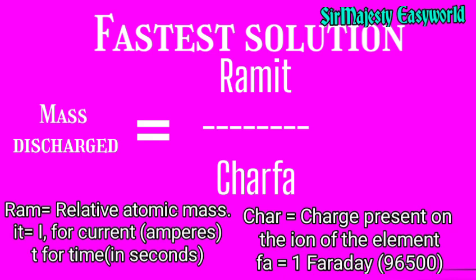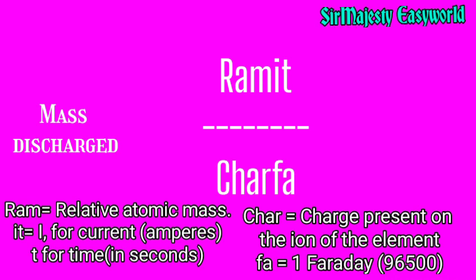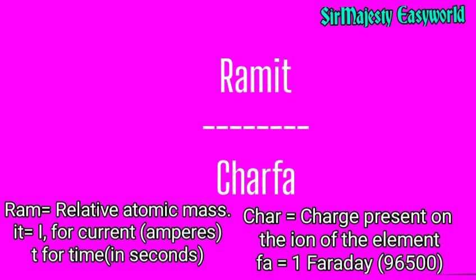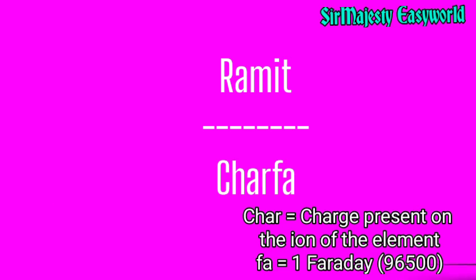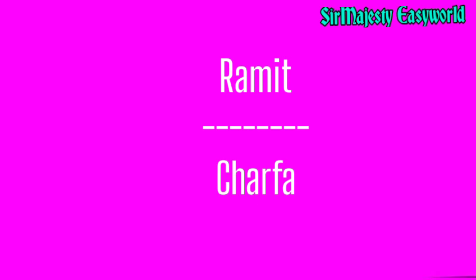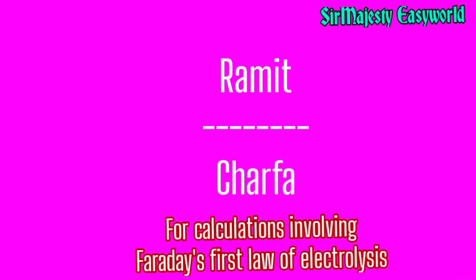The formula to be used in this calculation is: mass discharged equals RAM×I×T over charge×F. RAM is the relative atomic mass of the element, I and T are current and time, charge is the charge present on the ion of the element, and F is one Faraday, which is 96,500.